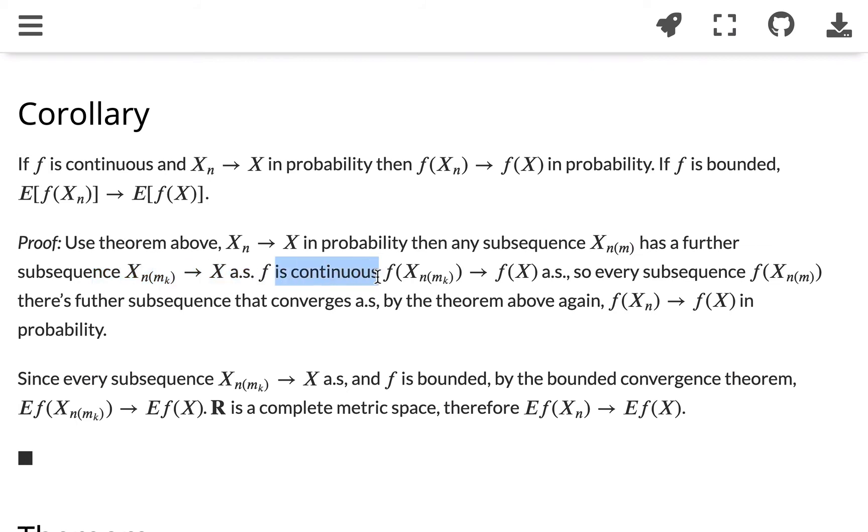And because f is continuous, f(x_n_k) converged to f(x) almost surely. So every subsequence has a further subsequence that converged almost surely.